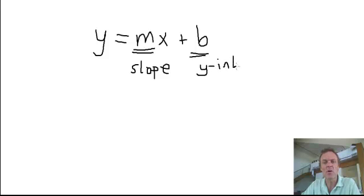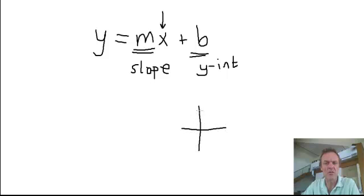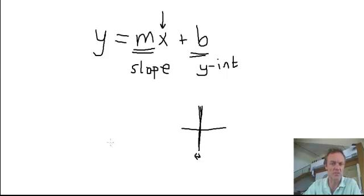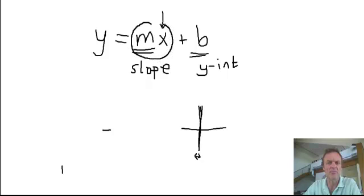The reason why it's the y-intercept is that when x equals 0 on a graph — in other words, I haven't moved left or right — when x equals 0, you put x equal to 0, all of this becomes 0, and you are just left with b, the y-intercept. So that's y.